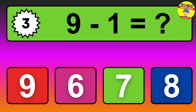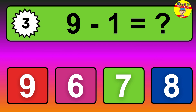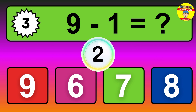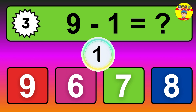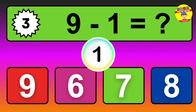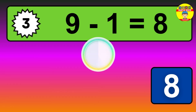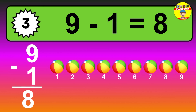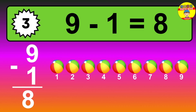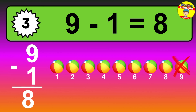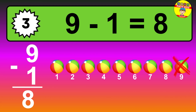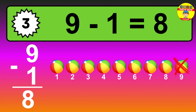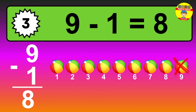Question three: nine minus one equals what? The answer is nine minus one is eight. Let's count it: one, two, three, four, five, six, seven, eight.